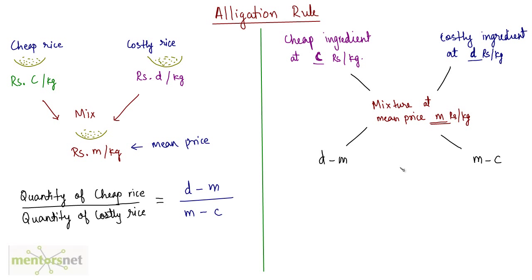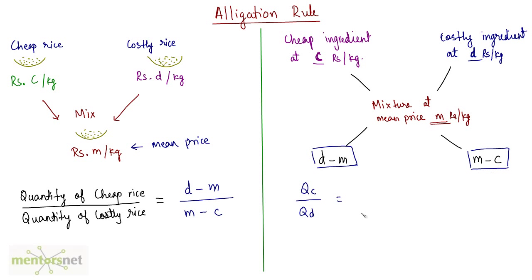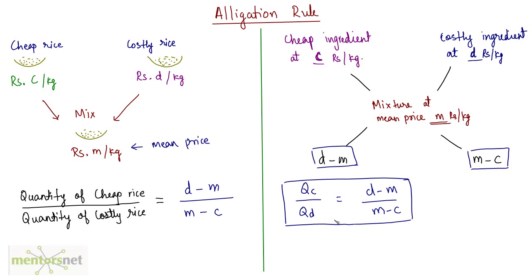D is going to be greater than the mean price. So the formula — the ratio of the quantity of cheap ingredient upon the quantity of the costly ingredient, written as QC by QD — is equal to D minus M divided by M minus C. This is the formula that we have and we can use it to solve questions on allegations.